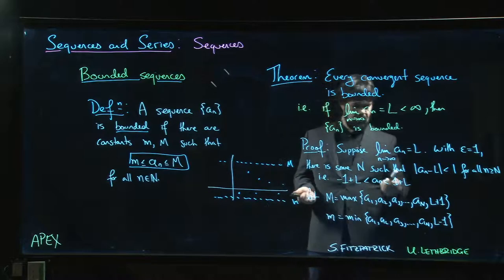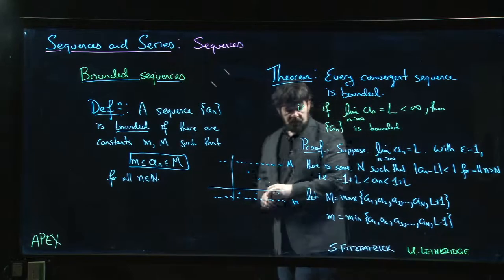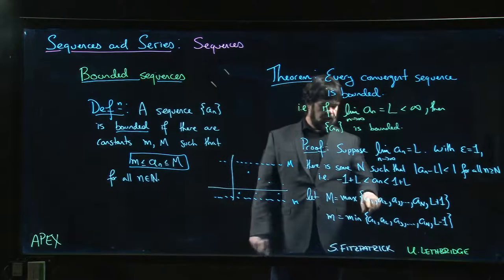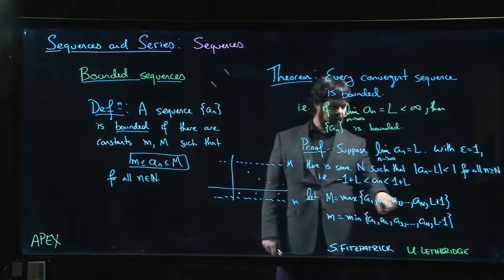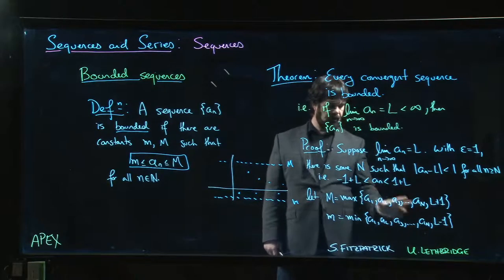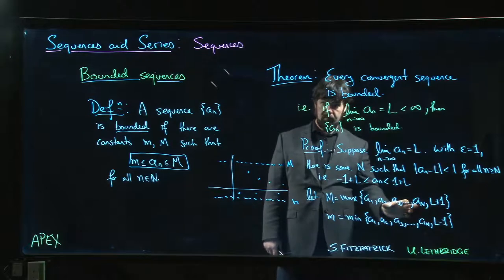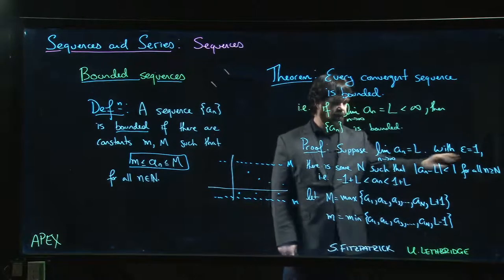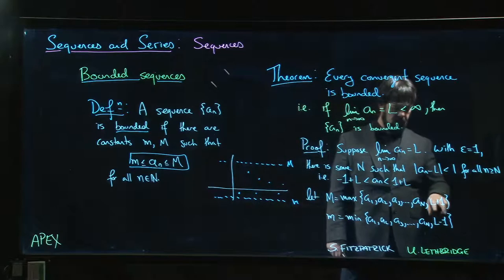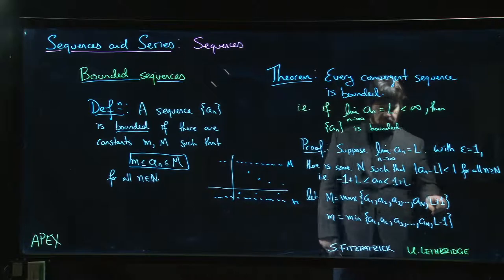If we take any term in the sequence, any a_n, then it has to be less than or equal to the biggest of these numbers. If it's one of those first terms, it has to be less than or equal to one of these. And if we take an a_n for little n bigger than this capital N, then we know that a_n has to be smaller than L + 1. So whichever one of these numbers is biggest, that's the upper bound.